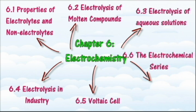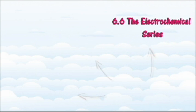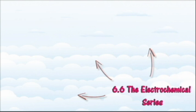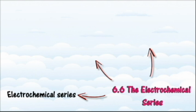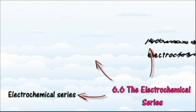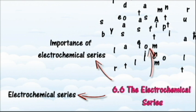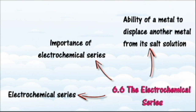In section 6.6 we will learn about the electrochemical series and how they are constructed. At the end of this section you should be able to describe the principles used in constructing the electrochemical series, construct the electrochemical series, explain the importance of the electrochemical series, predict the ability of a metal to displace another metal from its salt solution, and write the chemical equations for metal displacement reactions.